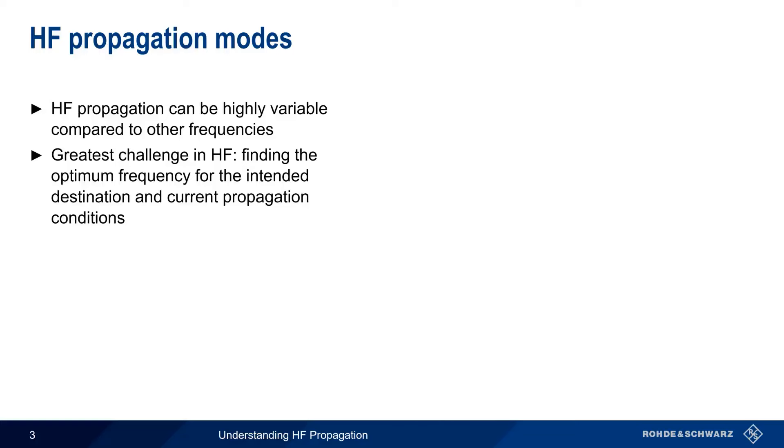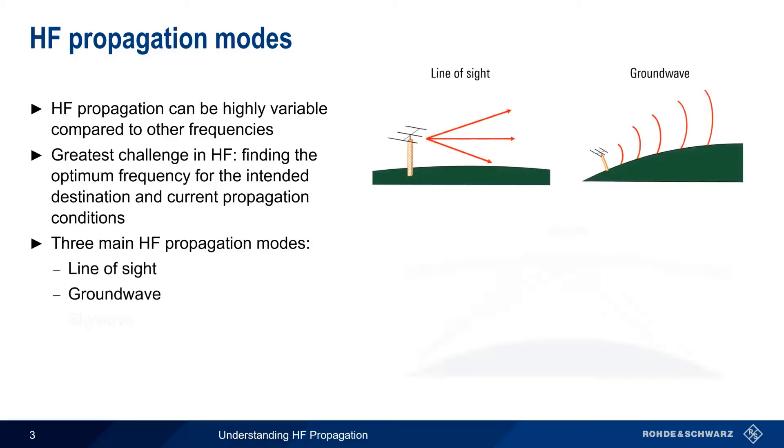Before we go into more detail about how this is done, let's briefly cover the three main HF propagation modes: Line of Sight, Ground Wave, and Sky Wave.